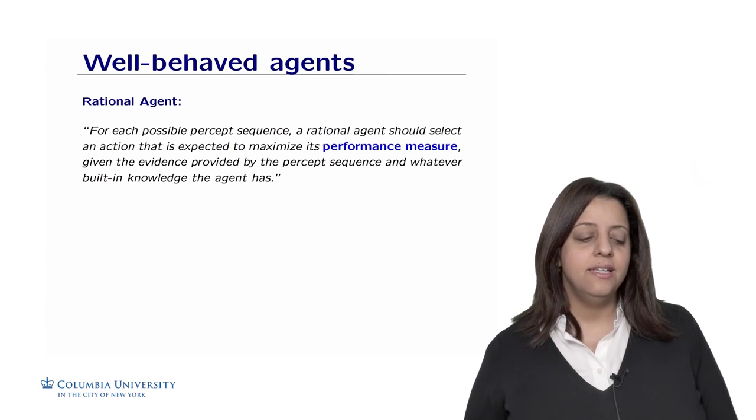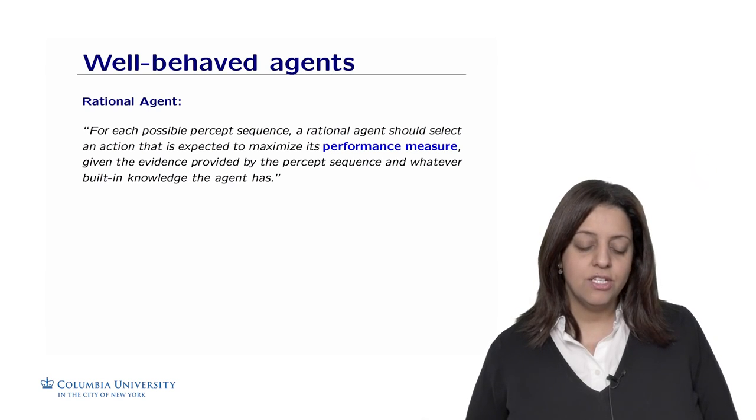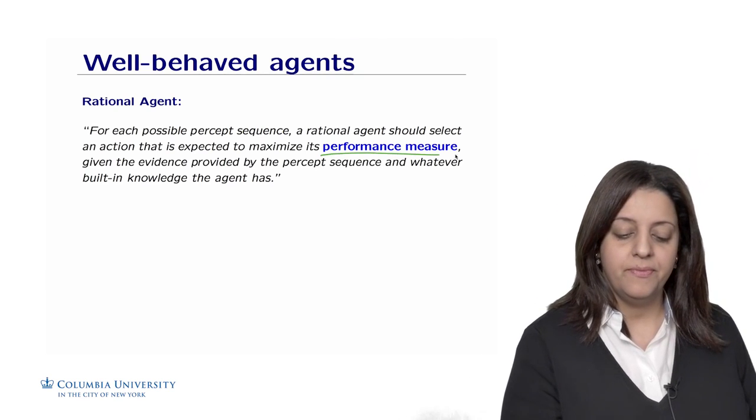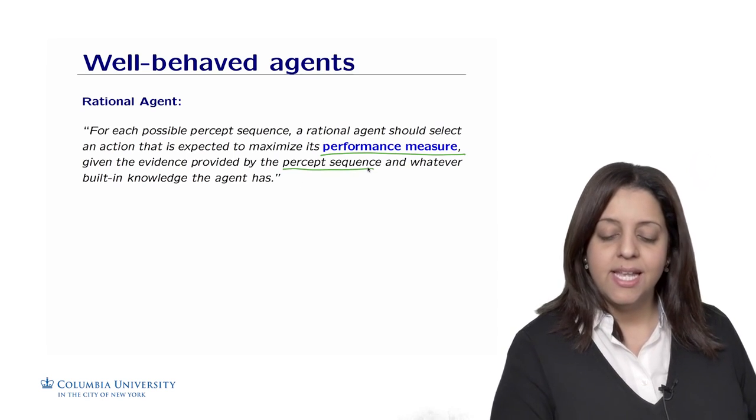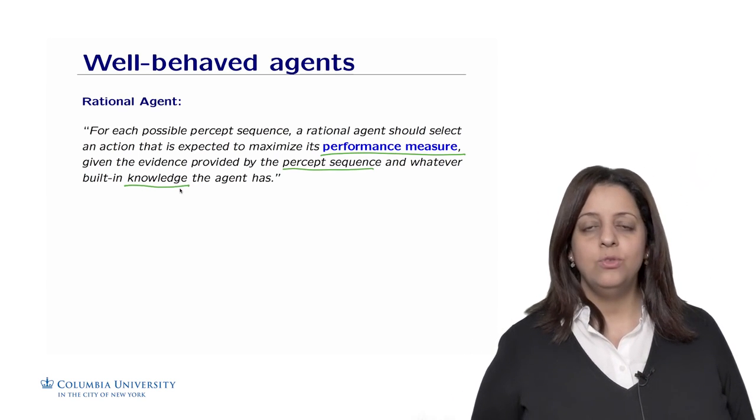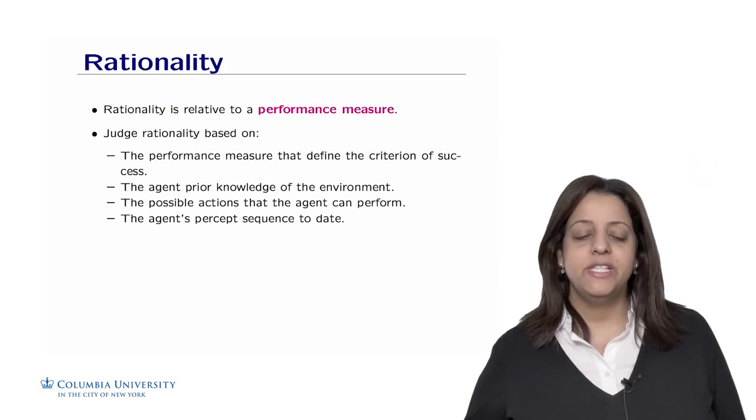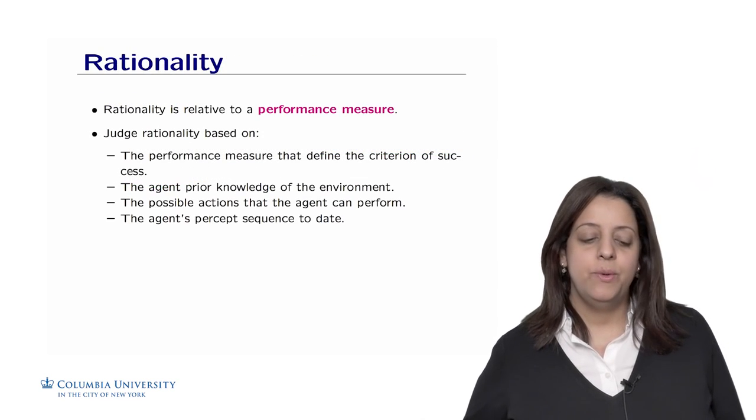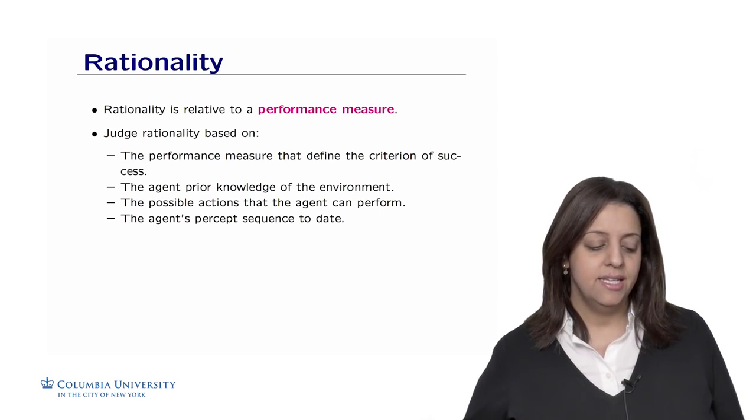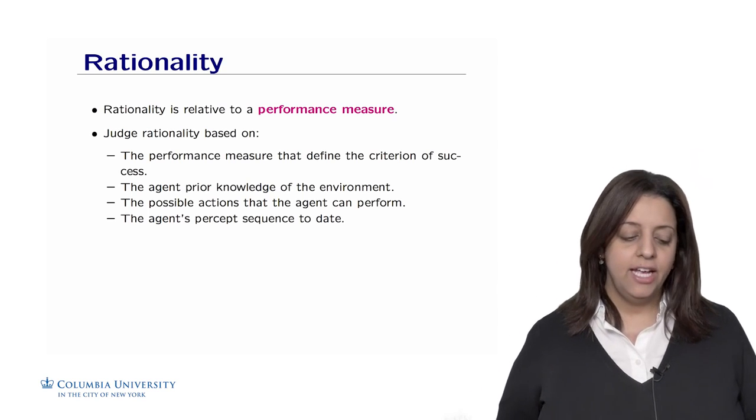We are interested in well-behaved agents, and these are rational agents that are defined according to Russell and Norvig as follows: For each possible percept sequence, a rational agent should select an action that is expected to maximize its performance measure given the evidence provided by the percept sequence and whatever background knowledge or built-in knowledge the agent has. So we want this agent to be rational in the sense that it's going to do its best given what it is observing and given whatever background knowledge the agent has. More specifically, we define rationality relative to a performance measure. And we judge rationality based on the performance measure that defines the criterion of success, the agent's prior knowledge of the environment, the possible actions that the agent can perform, and finally the agent percept sequence to date.